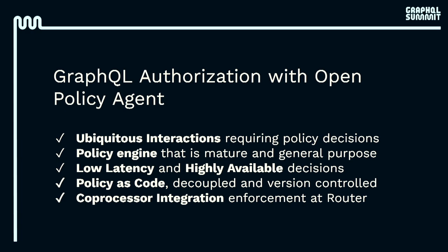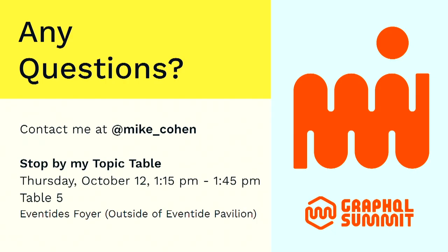In summary, what I've walked through today is that there is a clear need in some organizations for a general purpose policy engine — we have many more interactions that require some sort of policy decision. OPA is a mature, general-purpose policy engine. We can deploy it in a way that gives us low latency and highly available policy decisions. We can write policy as code, with benefits like decoupling and maintaining policies in version control. And I demonstrated how you might integrate OPA with the external coprocessor. You can reach me on Twitter at Mike_Cohen, and I've got a topic table in about an hour at table five.